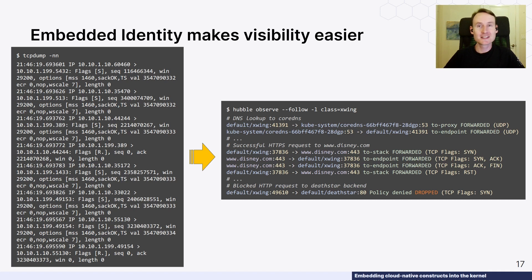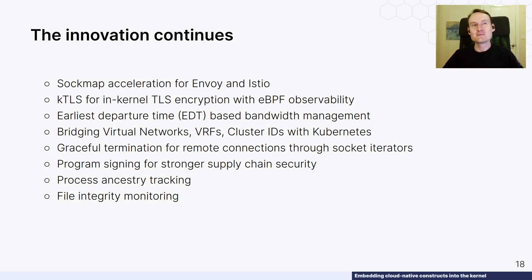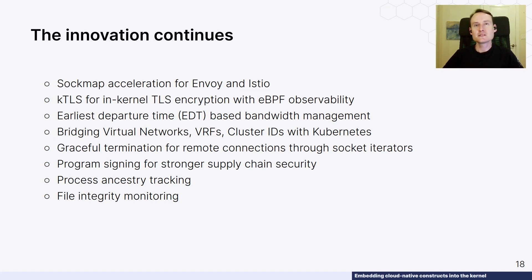While I'd love to spend more time digging into the details of how eBPF allows us to tailor the kernel for these cloud-native use cases, let me just leave you with this. We've been working on a range of really interesting use cases in the Cilium community for the last several years — from sock maps to gracefully terminating remote connections on other nodes to file integrity monitoring. These are mostly listed in order of older to newer, so if you're interested in any particular item, there are often blogs or presentations out there that you can find. Several of these are also under active development, so reach out if they're relevant to your use case.